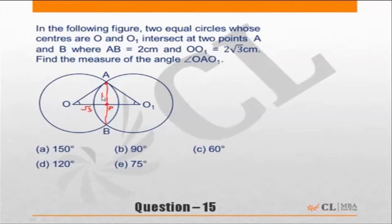So if this is 1, this is √3, so 1 by √3 should be tan 30°. This is perpendicular over base. If it is P by B, tan 30° will be 1 by √3, so this is going to be 60°. This is 60°, this is also 60°, so total angle OAO₁ must be 120 degrees.